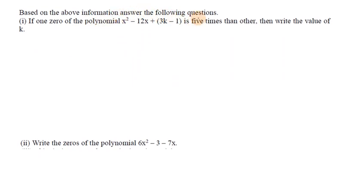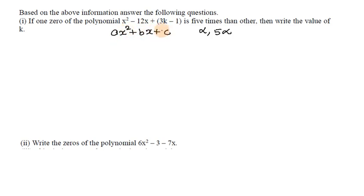Based on the above information, answer the following questions. If one zero of the polynomial is 5 times the other, compare with ax² + bx + c, where a=1, b=-12, c=3k-1.